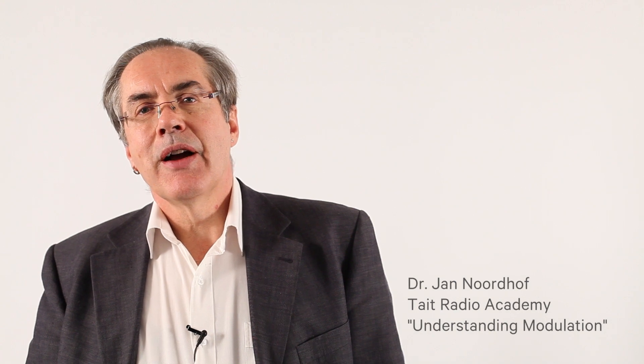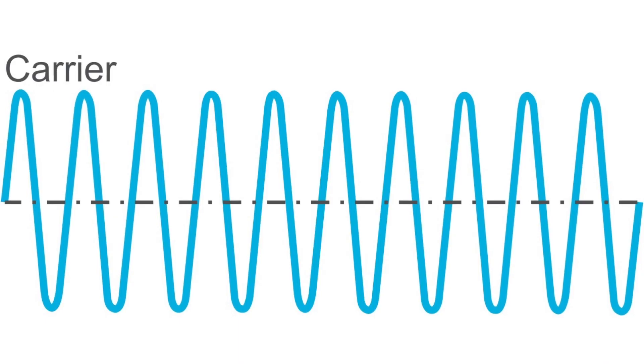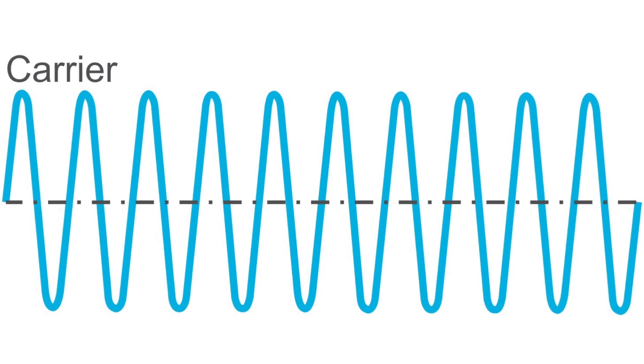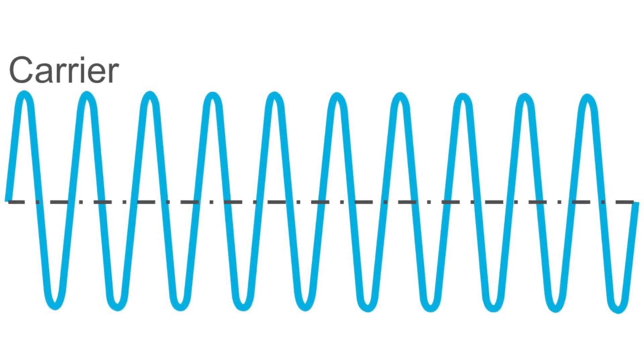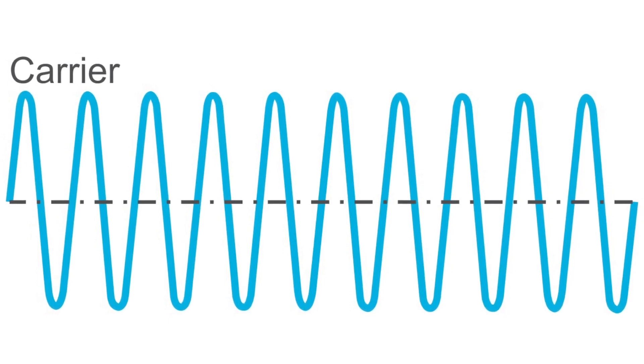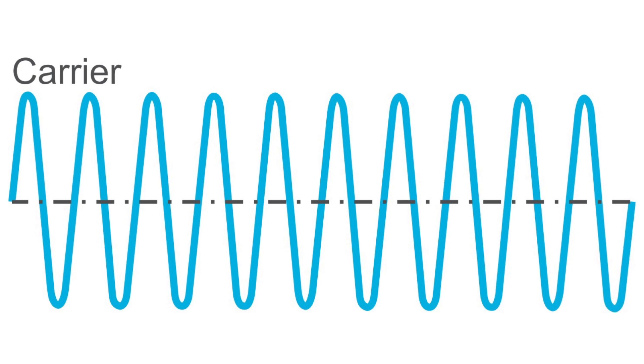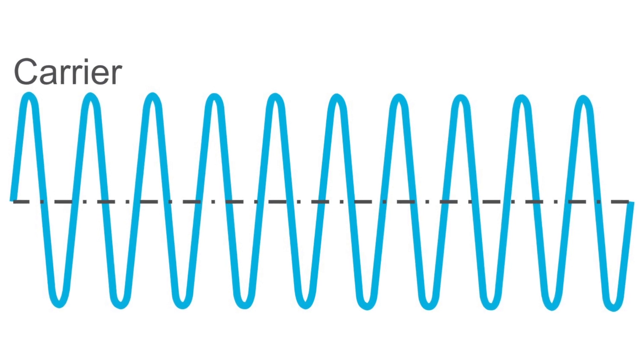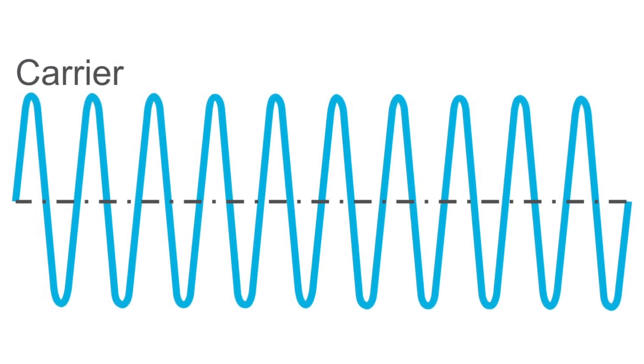The frequency of an RF channel is best understood as the frequency of a carrier wave. A carrier wave is a pure wave of constant frequency, a bit like a sine wave. By itself, it doesn't carry much information of a kind that we can relate to, such as speech or data.